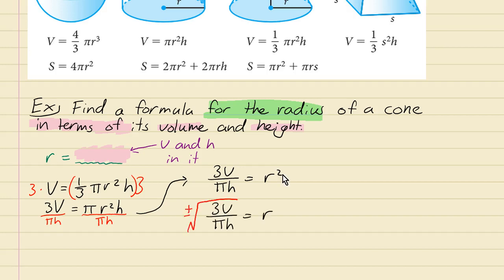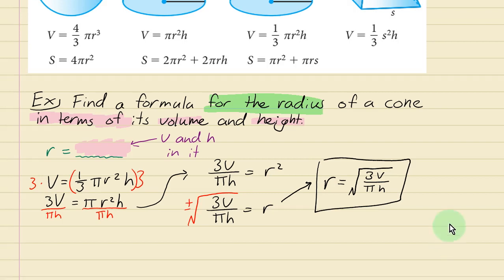However, in this case when we're talking about a radius, that's a length or a distance, and it doesn't make any sense to have a negative radius. You can't have like a cone that has less than zero centimeters of radius, so we're just going to use the positive one, and that should be the correct answer for that.